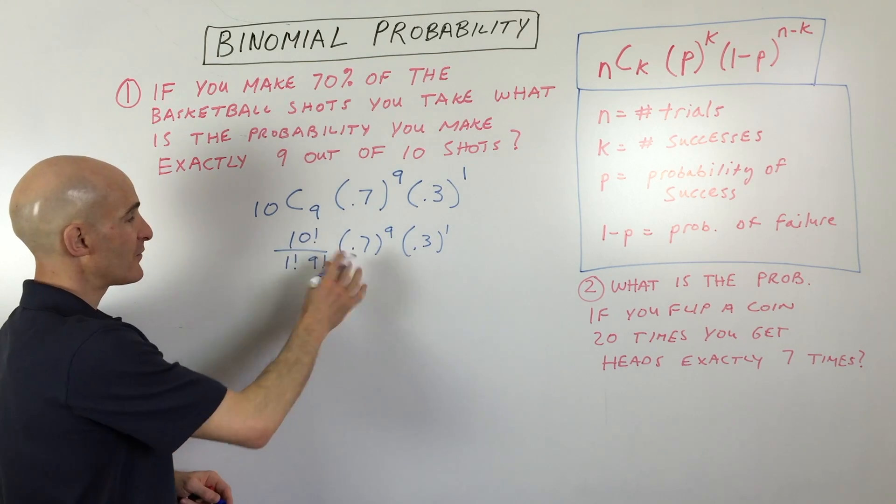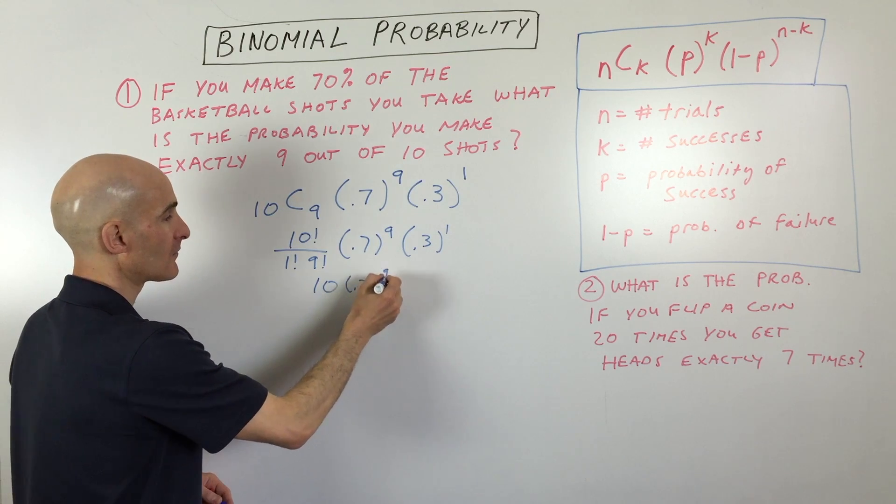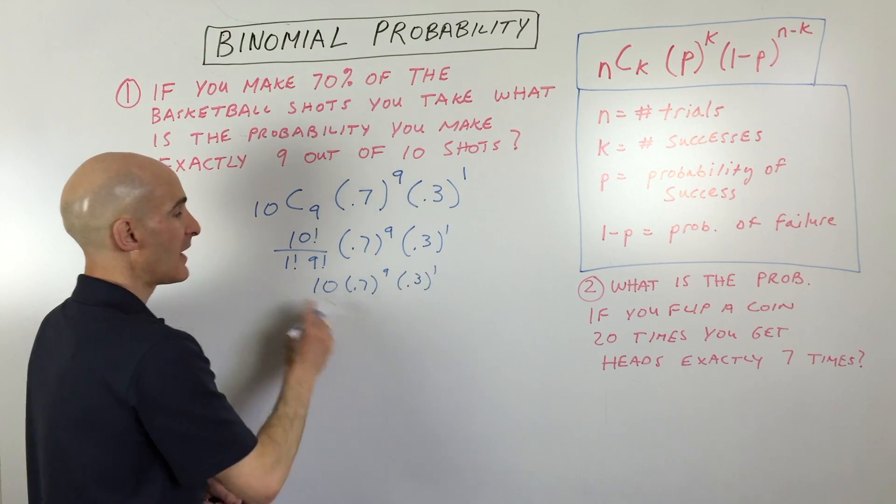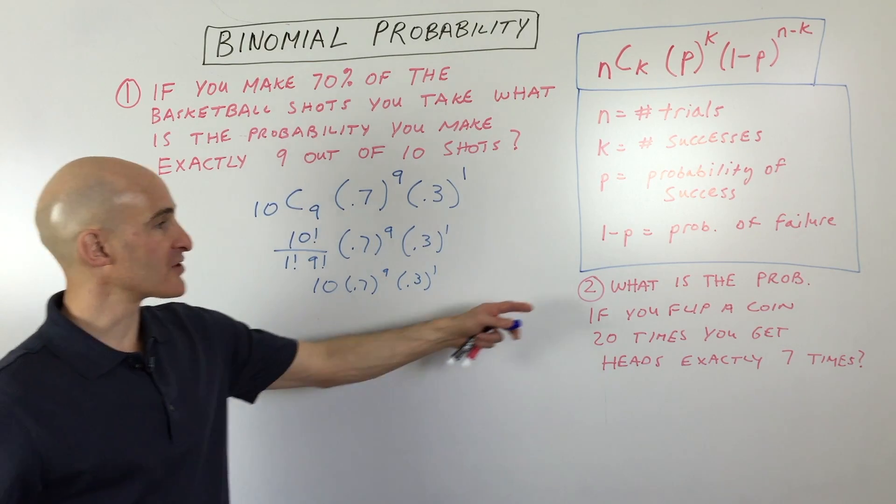So if you simplify that out, 10 factorial divided by nine factorial is just going to be 10. And if you simplify that out, that's going to give you the probability. So let's look at another example.